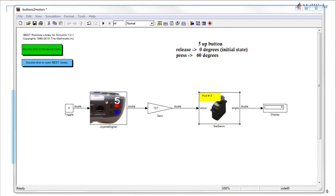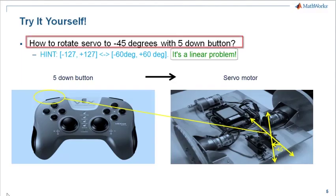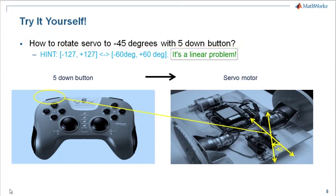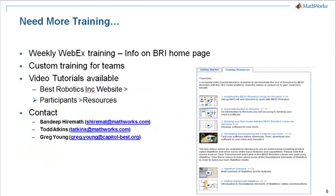Keeping that in mind, let's try this exercise: how to rotate your servo motor by an angle of minus 45 degrees using the 5 Down button. This brings us to the end of this video, where we showed how you can use the digital buttons on your VEX controller to control the servo motors on your VEX robot. If you're looking for more training resources, please look at the information provided.